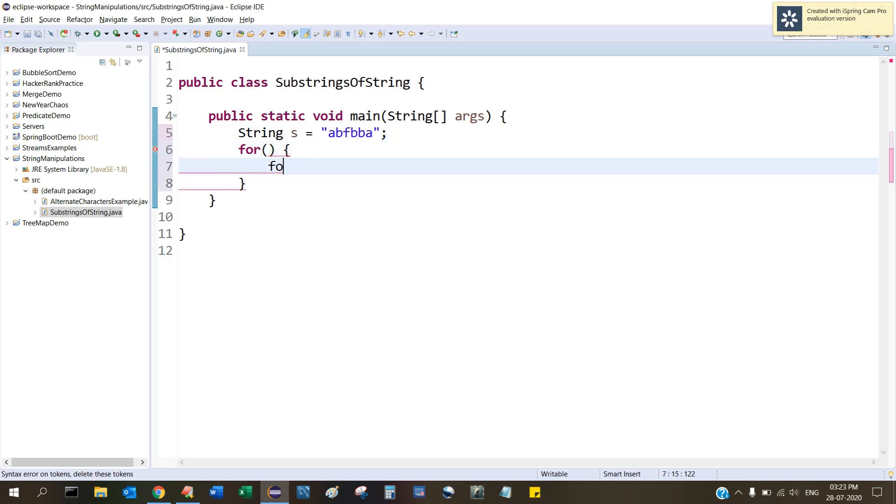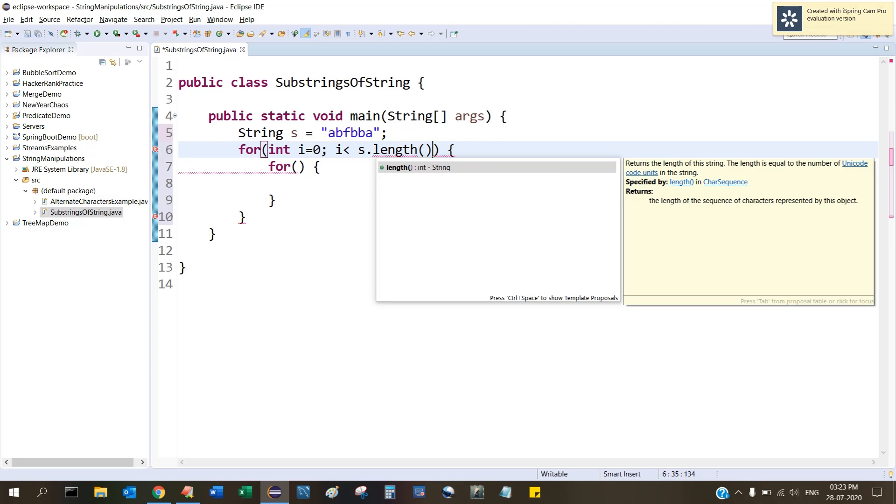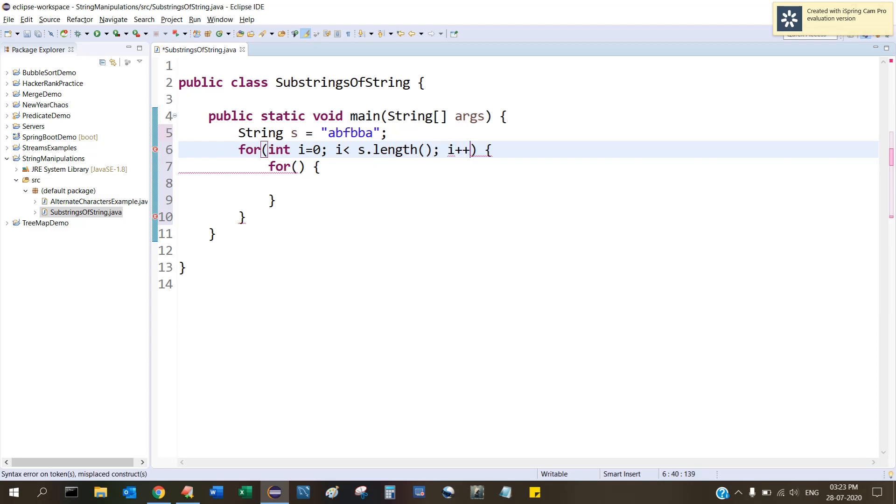I need another for loop. And here I am going to have i equal to zero, i less than s.length, and i plus plus. So this is my outer for loop.